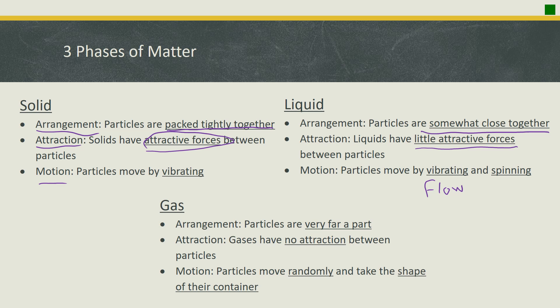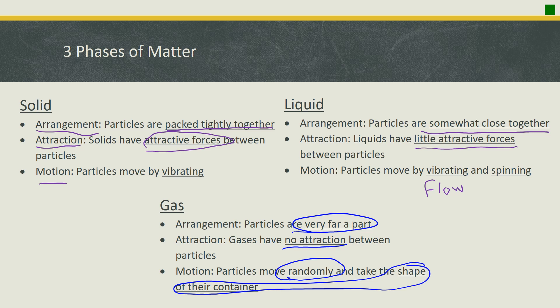A gas has particles that are extremely far apart, with almost no attraction with each other — if you have one particle next to another, it doesn't even phase it; it's not attracted or repelled. Gas particles move completely randomly and take the shape of the container. A solid maintains its shape and volume regardless of the container, a liquid maintains its volume but not its shape, taking the shape of whichever container it's poured into.